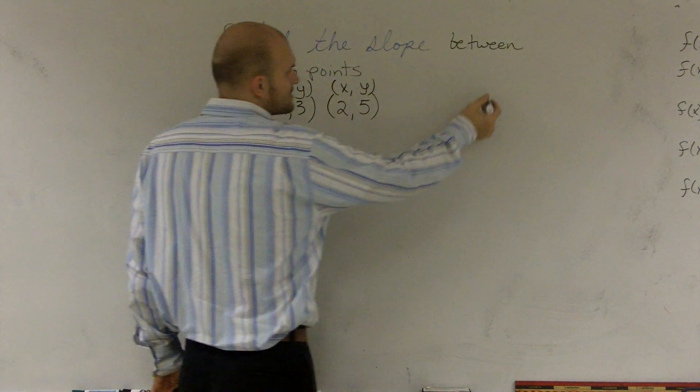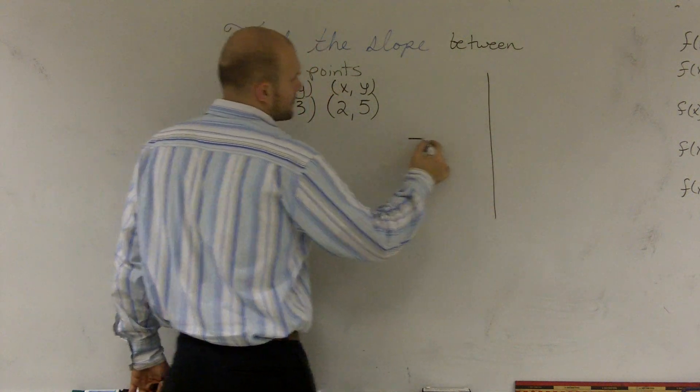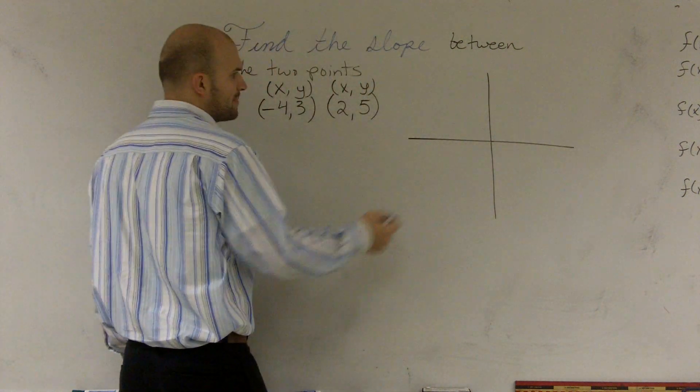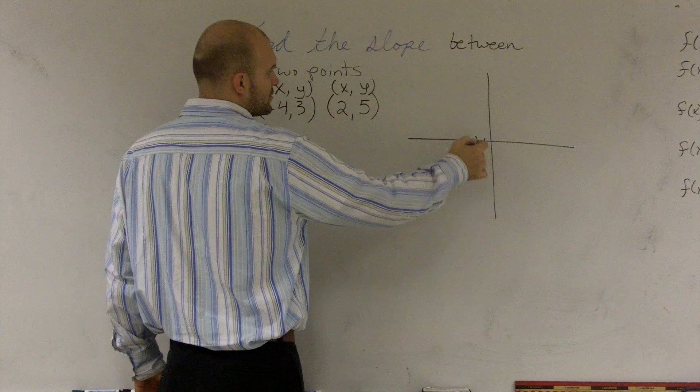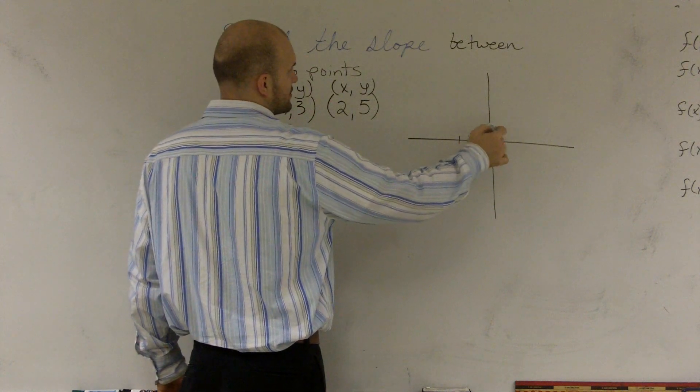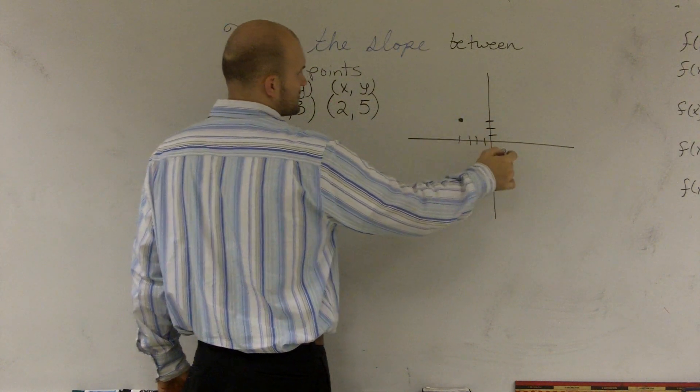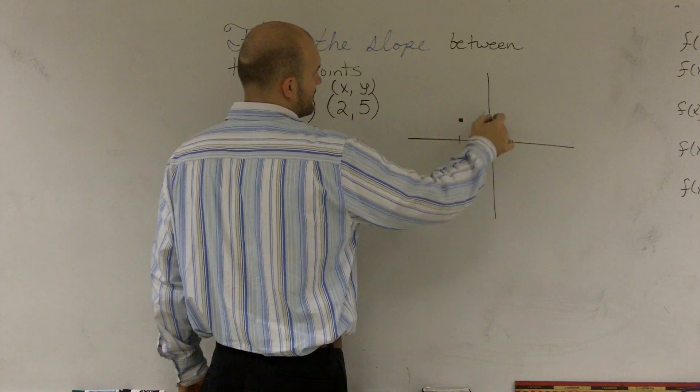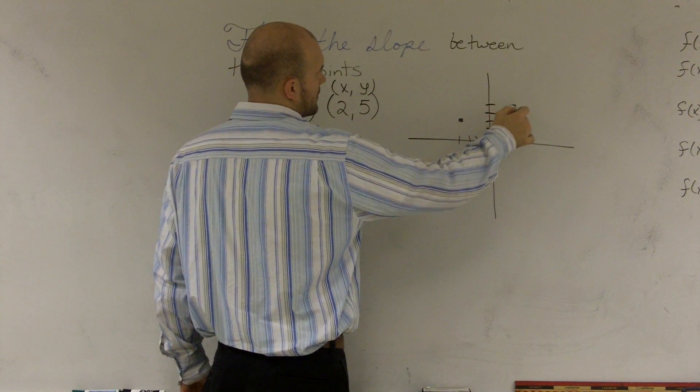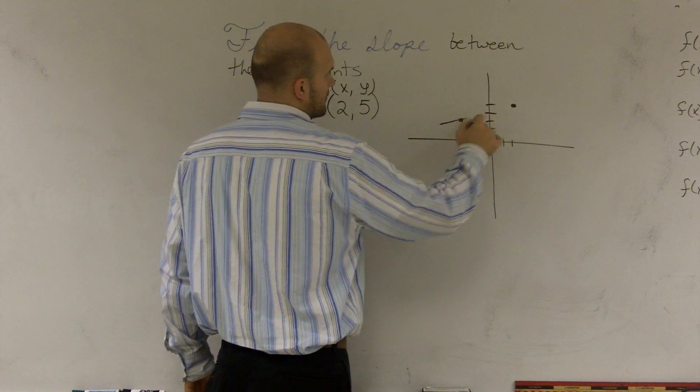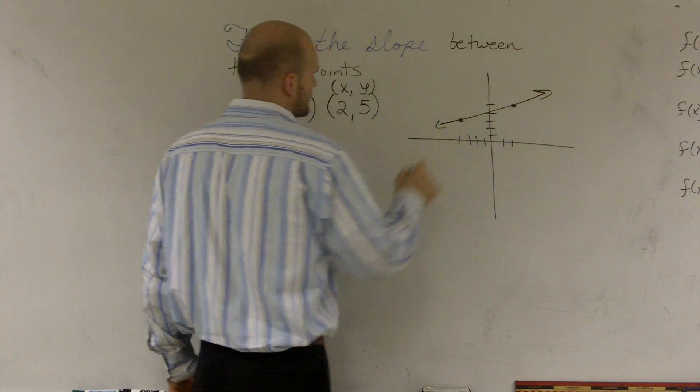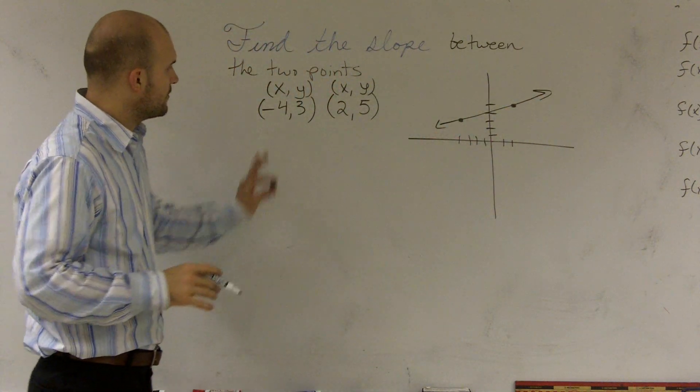So we could go ahead and plot these two points. And I'm just going to do this for a representation. Negative 1, 2, 3, 4, up 3, 1, 2, 3. And then this one is over 1, 2, up 5. OK. So we can do this.